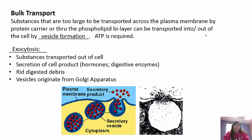Bulk transport moves large molecules across the plasma membrane by vesicle formation and requires ATP. Two types: exocytosis and endocytosis. Exocytosis - think 'exit' - transports substances out of the cell. We can secrete cell products like hormones or enzymes and get rid of waste. The vesicles originate from the Golgi, migrate to the plasma membrane, fuse with it, and expel their contents to the outside.